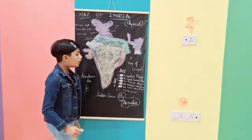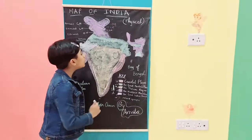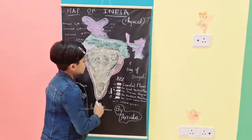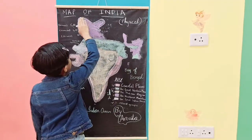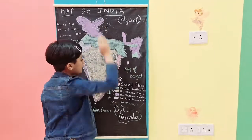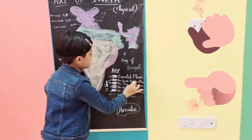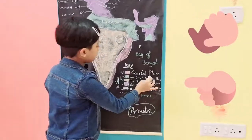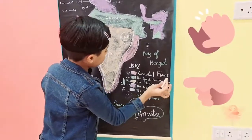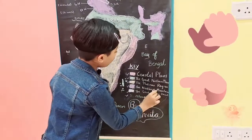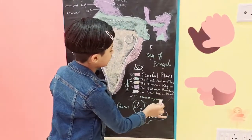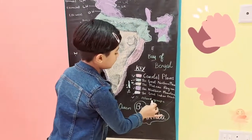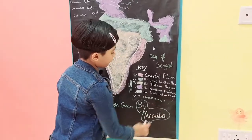Now I hope you are all thorough with the six physical divisions of India, which are the Coastal Plains, the Great Northern Plains, the Plateau Region, the Northern Mountains, the Great Indian Desert, and the Island Groups.